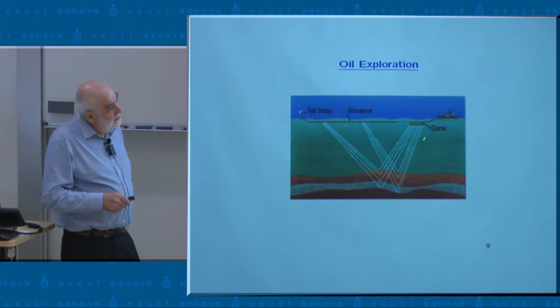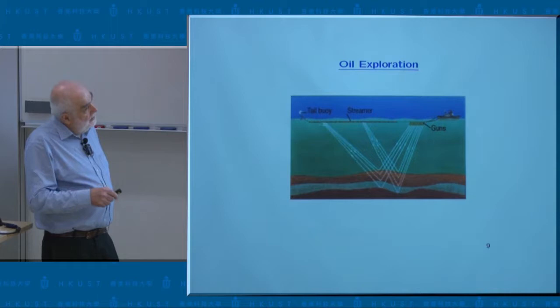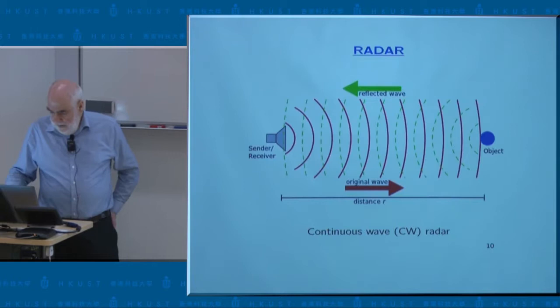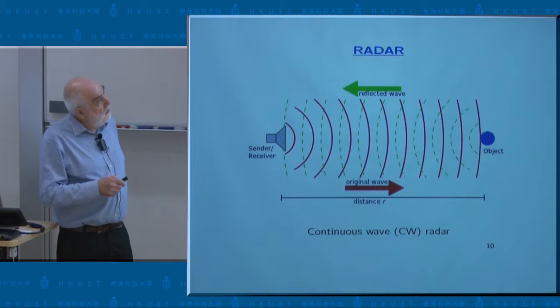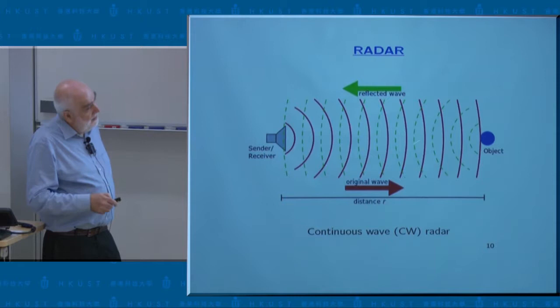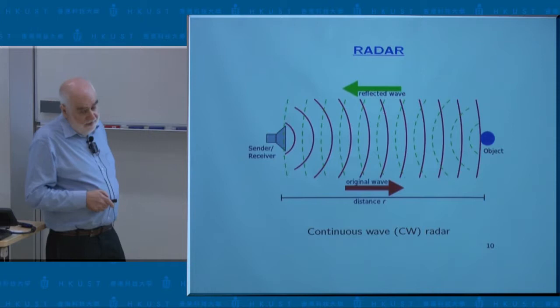This is a cartoon explaining what is done: these are guns of sound, you send explosions of sound and measure the response in the tail. From that you try to infer the structure — the ship moves usually in parallel lines. The same principle for electromagnetic waves led to the development of radar, which is used every day. You send electromagnetic waves, and from the echo you infer the properties of the object — where it is located, and so on.